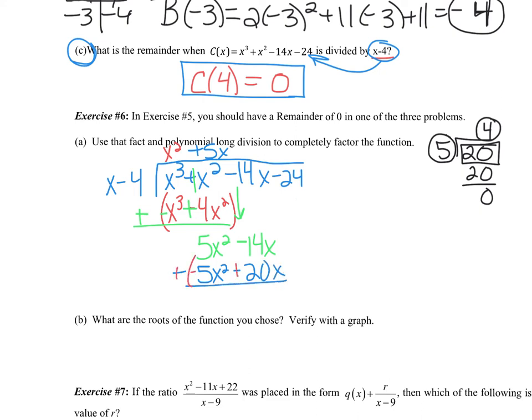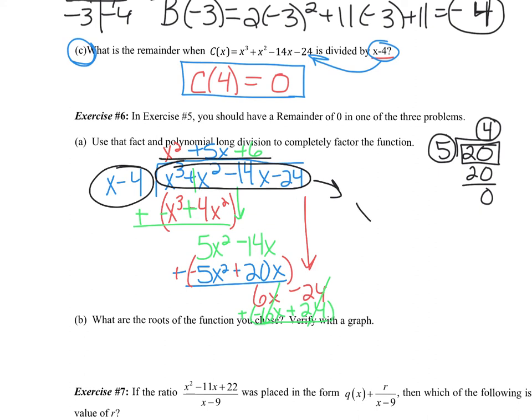Bring down our last number. So x goes into 6x six times. And we pretty quickly see when we multiply it out that everything's going to cancel. And that's as expected because we already knew from the remainder theorem and really the factor theorem, which is a part of the remainder theorem, that x - 4 was a factor of c(x). So that means c(x) factors into (x - 4) times (x^2 + 5x + 6).